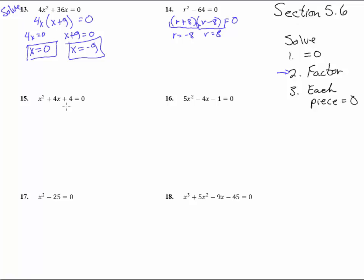Number 15, x squared plus 4x plus 4 equals zero. It's equal to zero, so step number two, factor it. x, x, and this is a plus 2 and a plus 2. So if we let this equal zero, x plus 2 equals zero, we get x equals negative 2. Same thing will happen over here, negative 2 happens twice. Oh well, so there's only one answer.